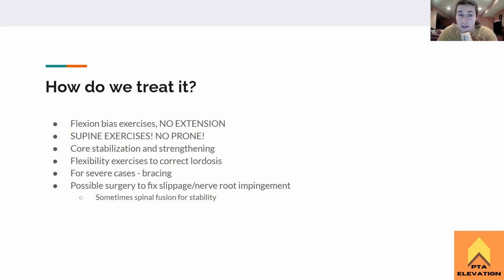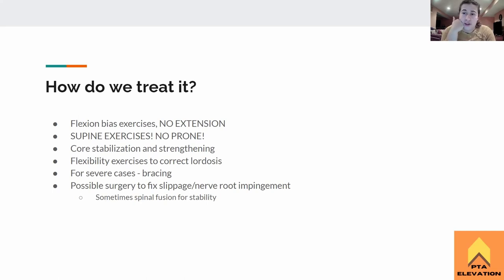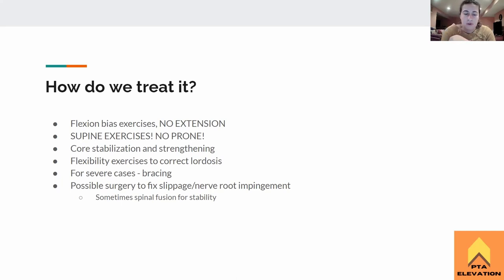Supine exercises with lots of flexion — we love flexion for these patients. Ball rollouts, supine marches, straight leg raises in flexion, double knee-to-chest, single knee-to-chest — these patients tolerate it really well and definitely prefer it. Core stabilization as well: lots of abdominal bracing, transverse abdominis activation, general core strengthening, balance and stability exercises, and strengthening the muscles around the core and legs to support the upper body.